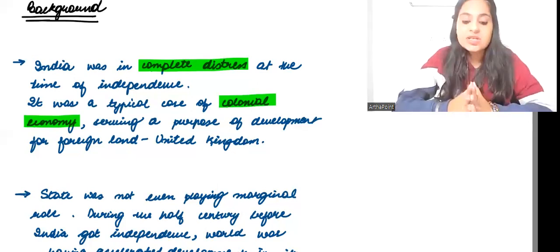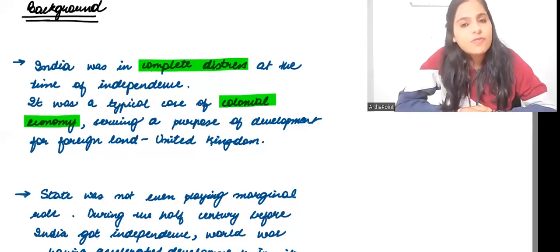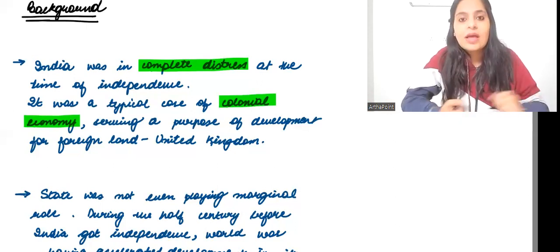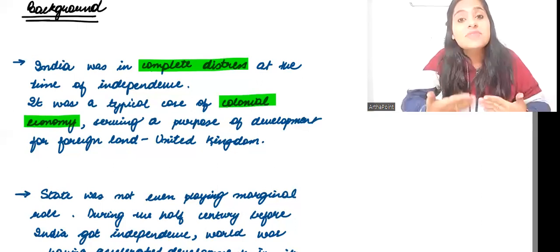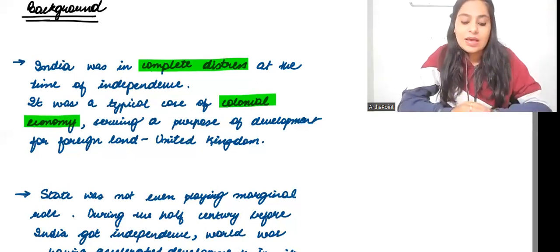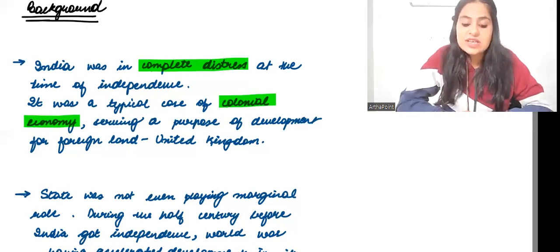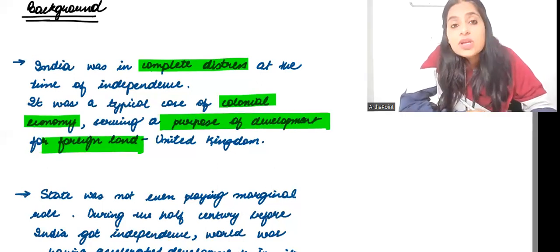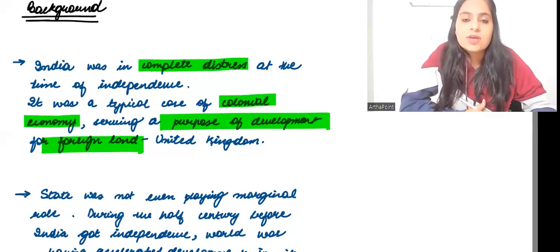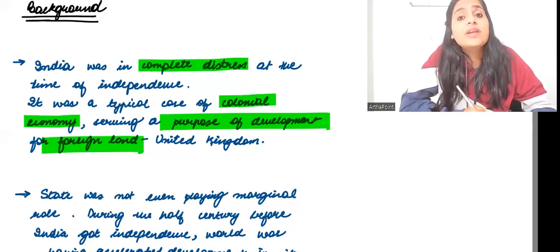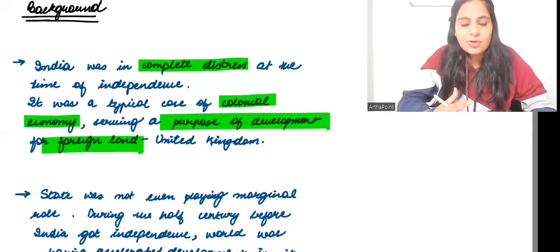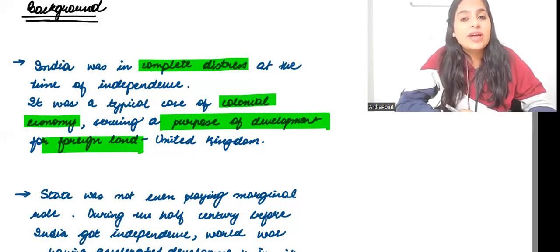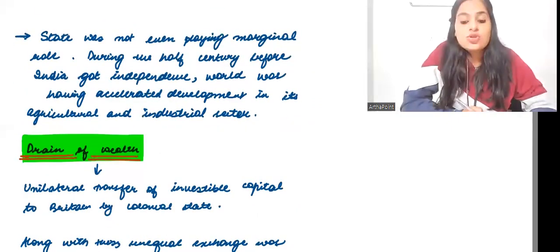We are trying to see what happened as part of the background when India just got its independence. India was in complete distress at the time of independence, of course. Because almost everything was lost and it also saw this partition and all its resources were gone. It had to start from the scratch.